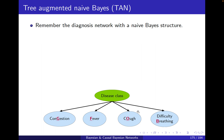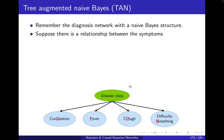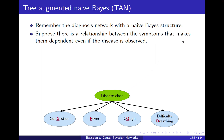We had this network before with a number of symptoms — congestion, fever, cough, difficulty breathing — and a number of possibilities as the disease class, say COVID or flu. We wanted to categorize instances based on their symptoms into different disease classes. In the Naive Bayes model, if the disease was observed, then the symptoms were independent from each other because this trail becomes de-active.